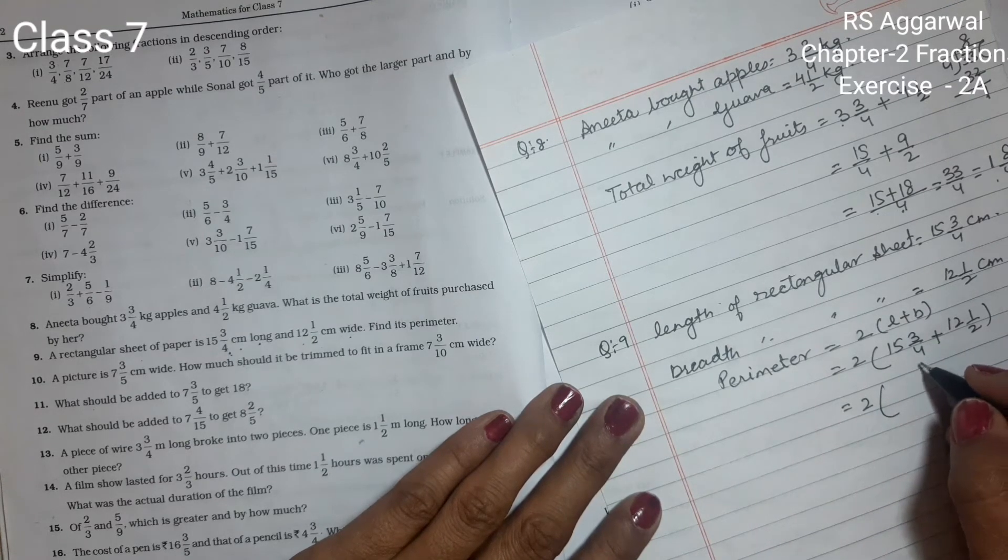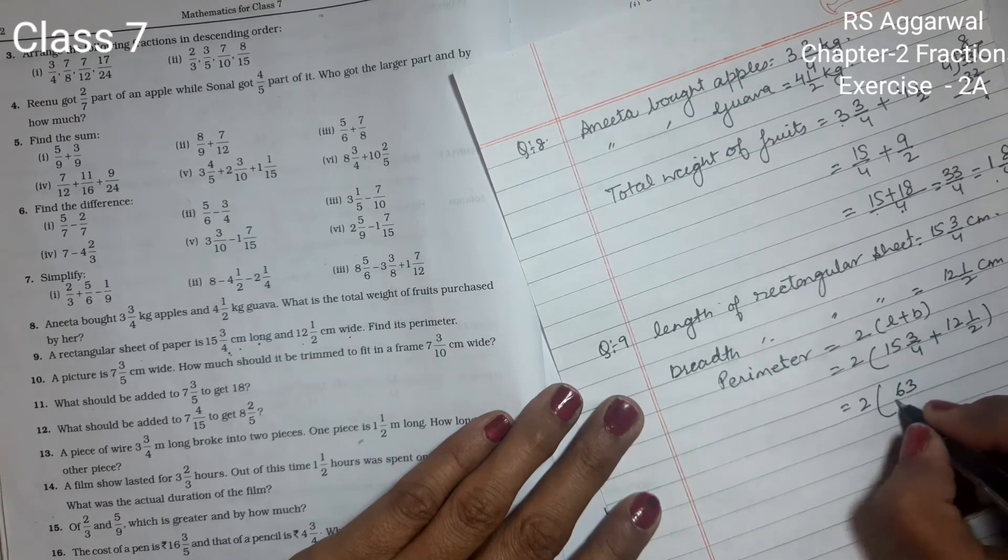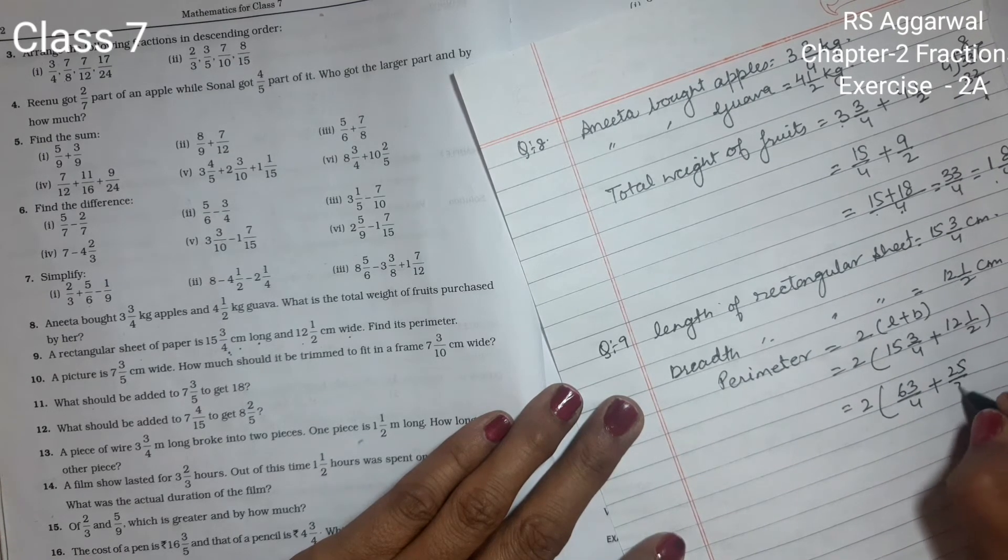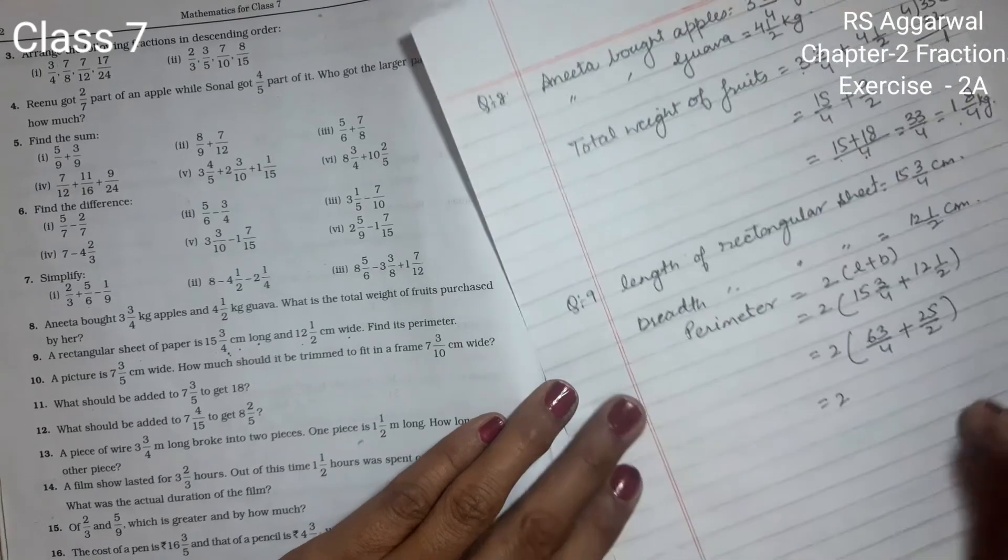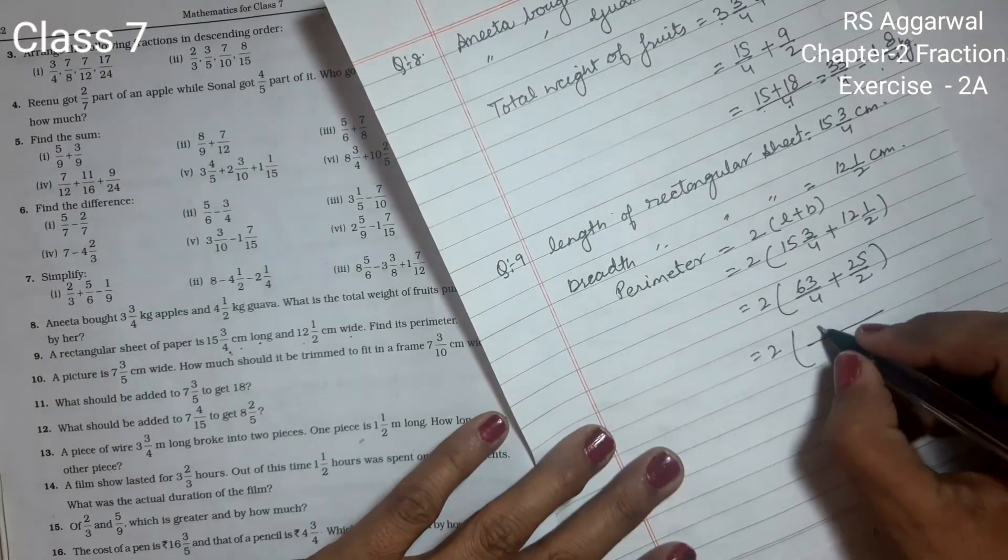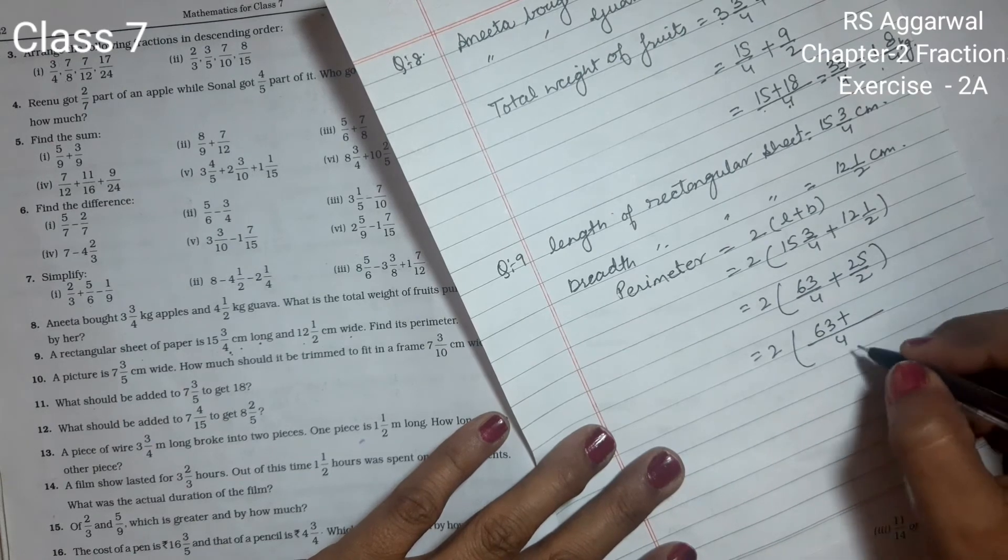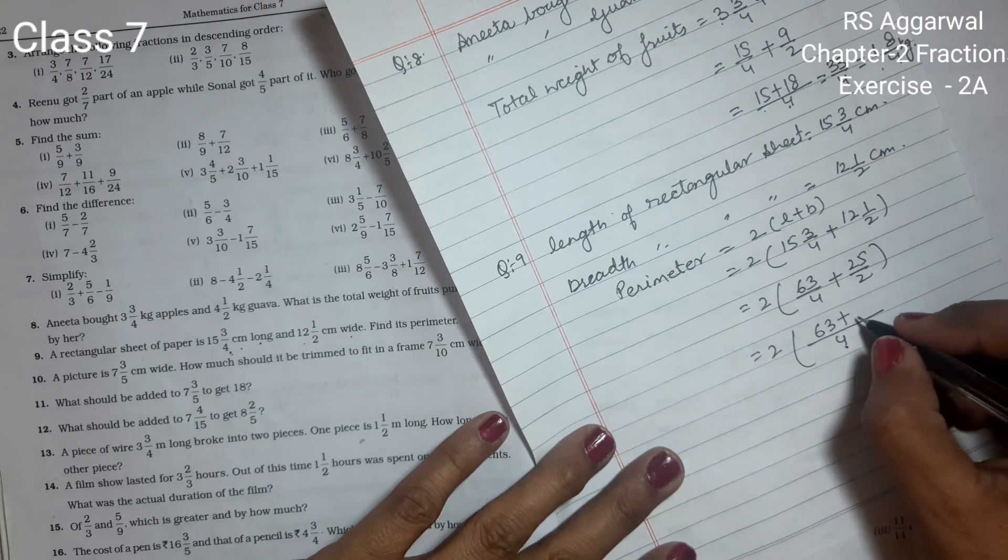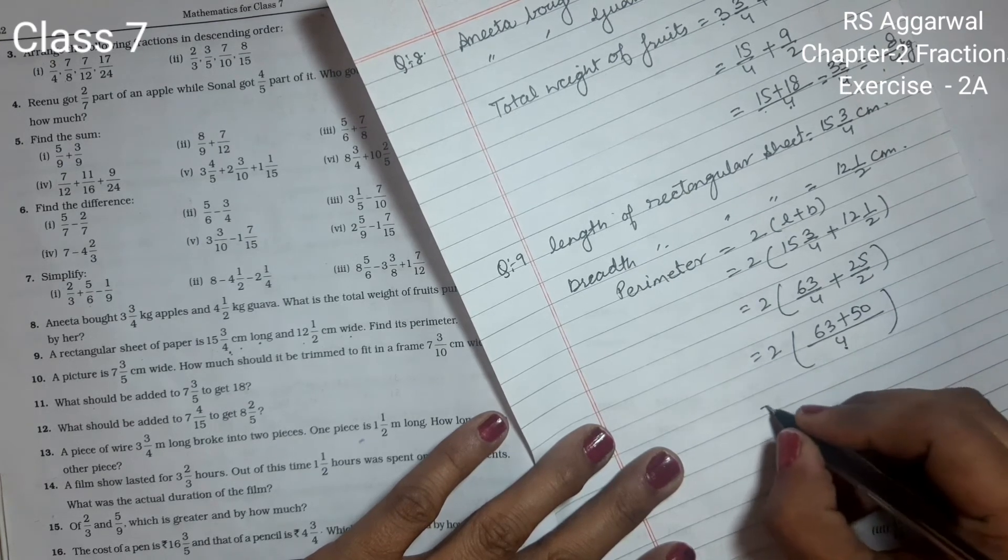15×4 is 60 plus 3 is 63 upon 4, plus 12×2 is 24 plus 1 is 25 upon 2. Converting to common denominator: 4 to 2 is 2, so 63 upon 4 plus 25×2 is 50 upon 4. I'm going to add: 63 plus 50 is 113 upon 4.